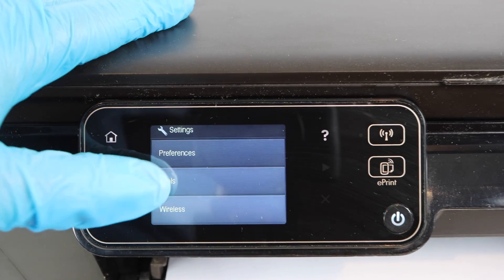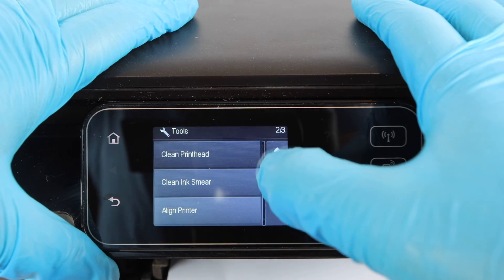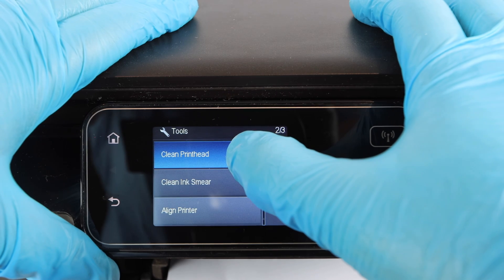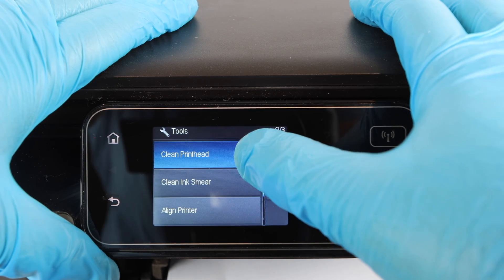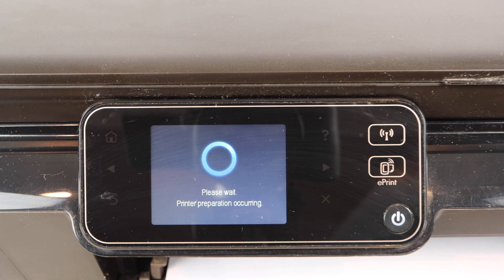Now we're going to click on the settings. We're going to hit tools and we're going to actually go all the way down and clean print head. This is what we want to select under tools, under settings, clean print head.